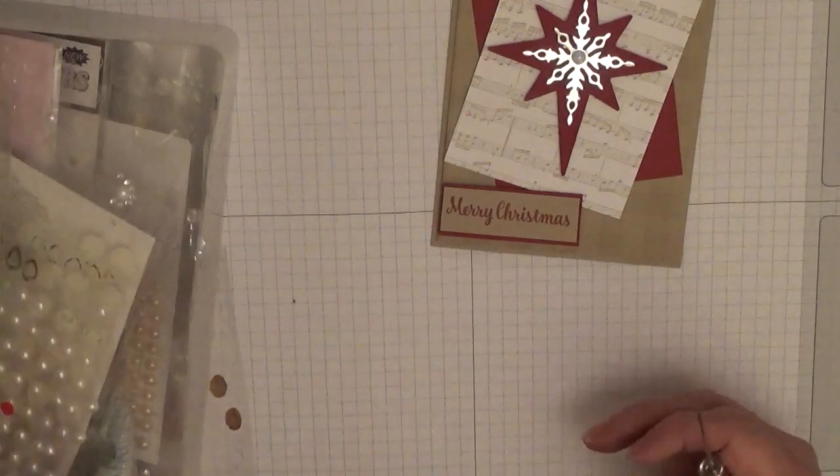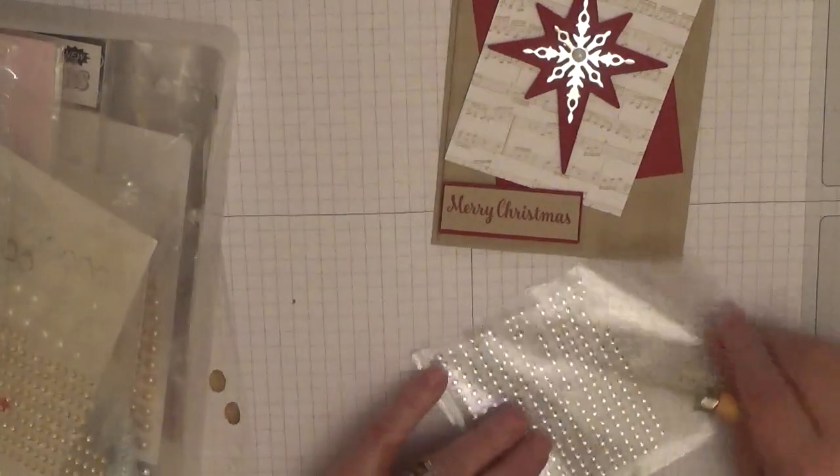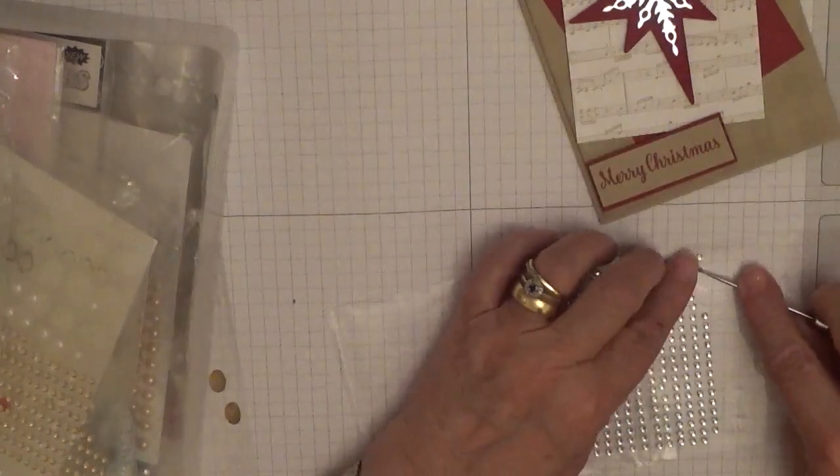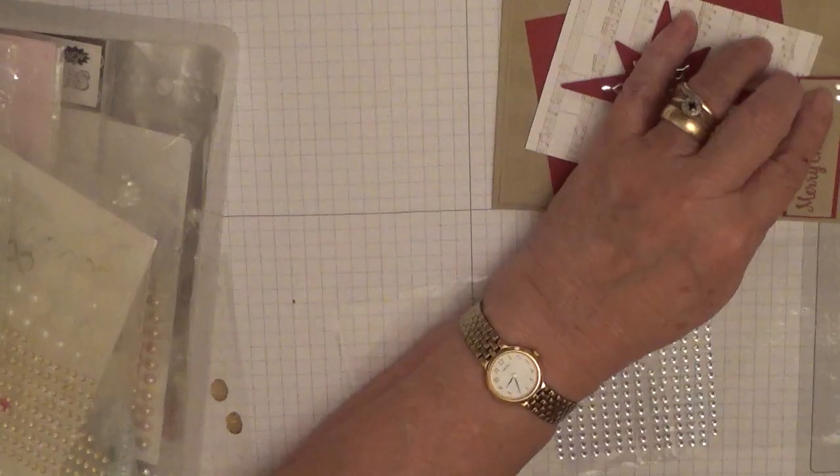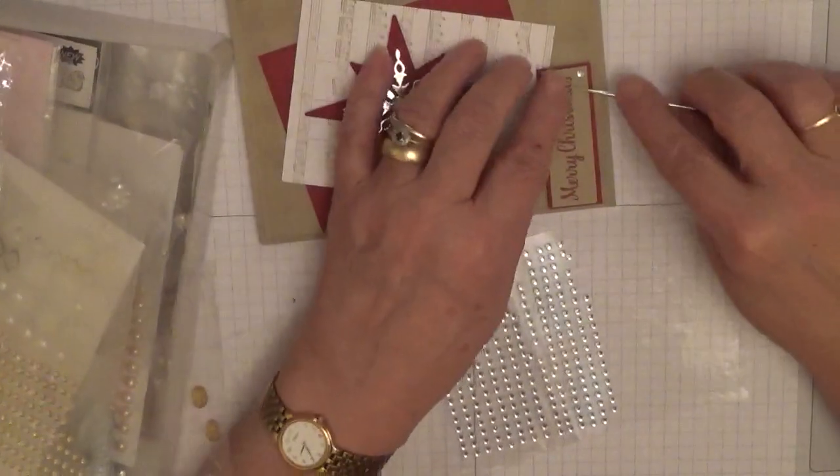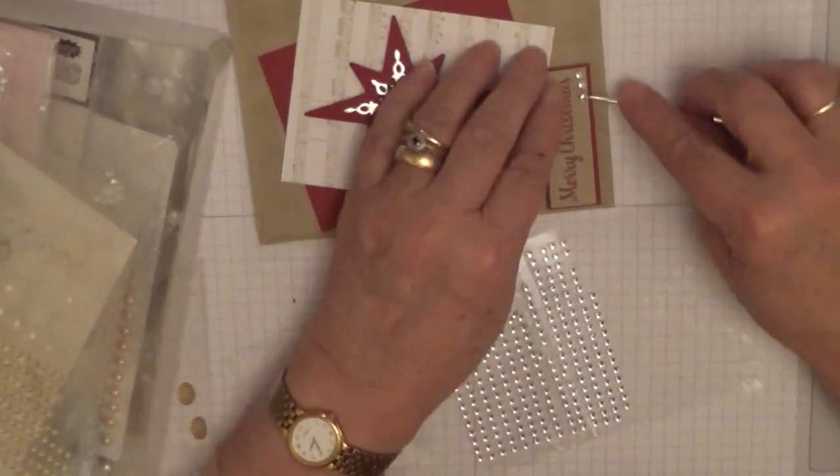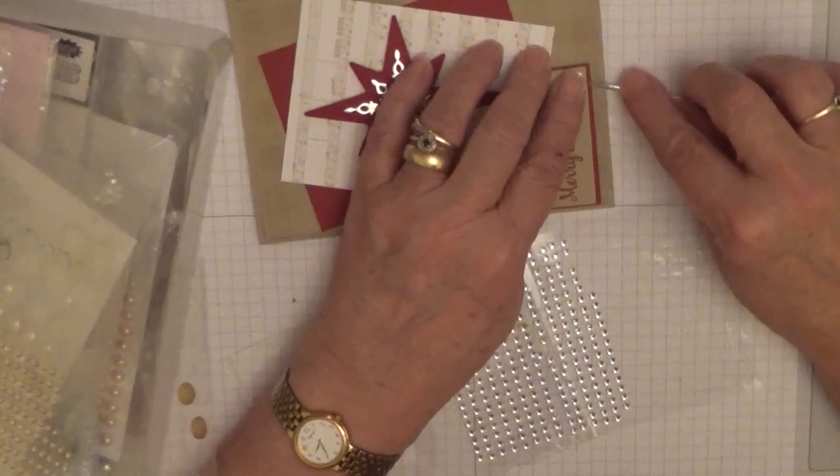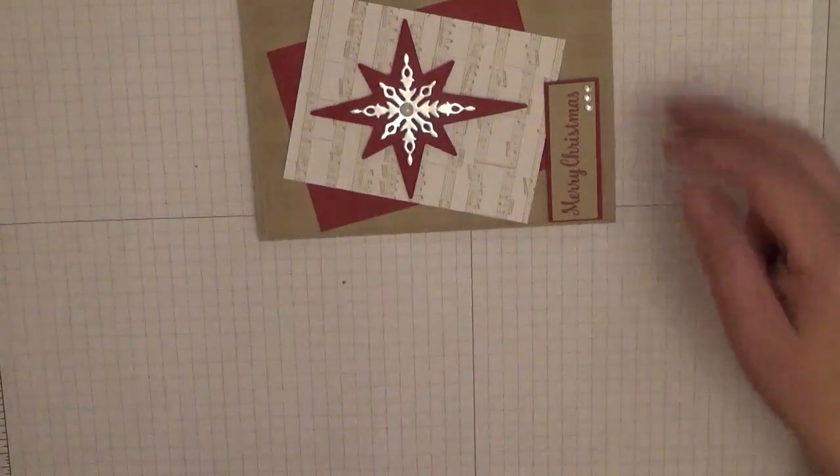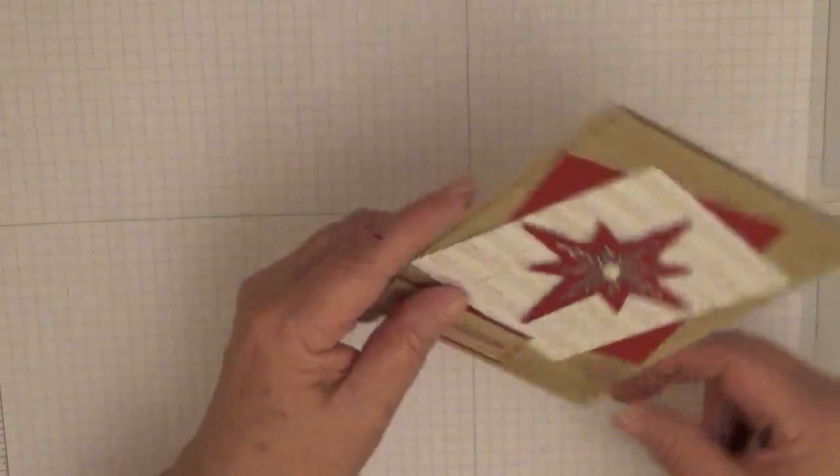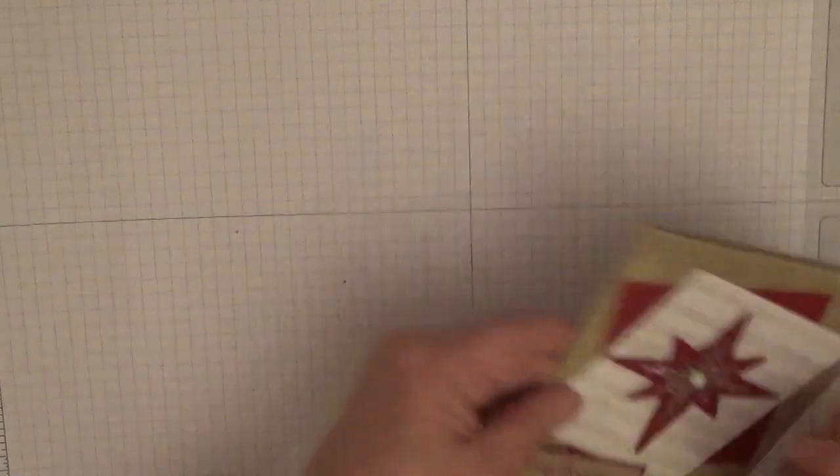Just pop a pearl there and some silverish ones, these ones to go here, I want three. Can you see what I'm doing? No you can't. There we are. That would have annoyed me until I've got it straight, that's it.